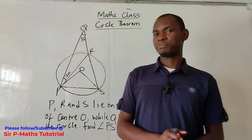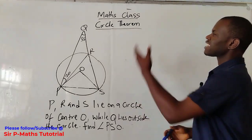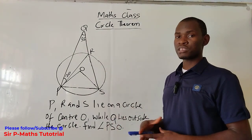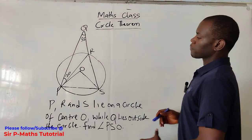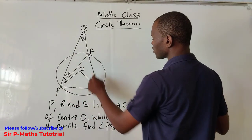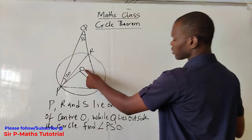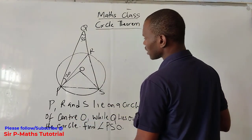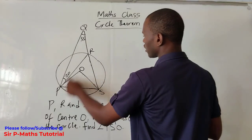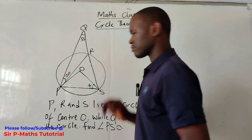Hi guys, welcome once again to SAPIMA tutorial. We have a problem here on the board to solve — a circle theorem problem. With this problem I'll be touching some of the circle theorems. We are given B, R, and S to be points on the circumference of the circle, and Q outside the circle. O is the center of the circle, and we are asked to find angle PSO — let us name it x.